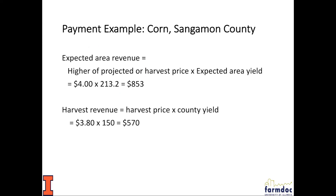Two other things are calculated. First, expected area revenue: the higher of projected or harvest price times the expected yield — $853 in this case. Second, harvest revenue: harvest price times county yield. Using a 150 bushel county yield, harvest revenue is $570. These items enter into the indemnity calculation through a payment factor.